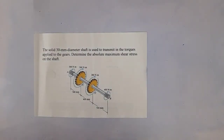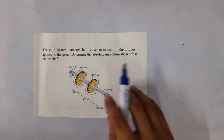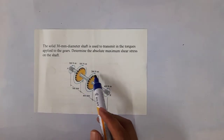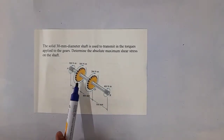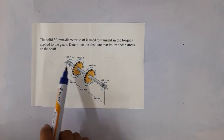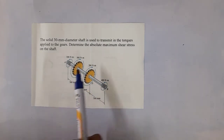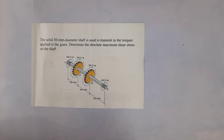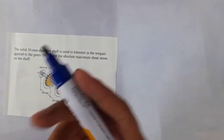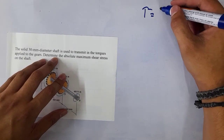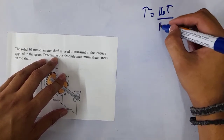Another example for torsional shearing stress: we have a 30 millimeter diameter shaft used to transmit the torques applied on the gears. We have gear C and gear D, and we're asked to find the absolute maximum shear stress on the shaft. The cross-sectional area is constant, so the diameter is constant, and since it's a solid shaft, for solid shafts, maximum shear stress is expressed as 16T divided by pi D cubed.